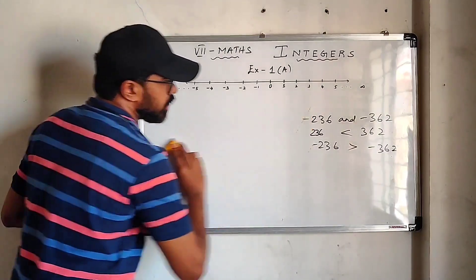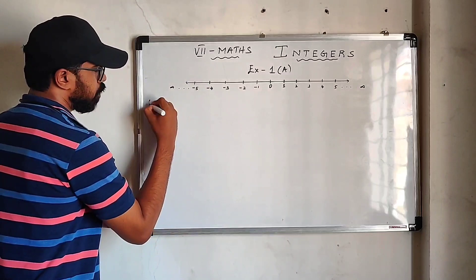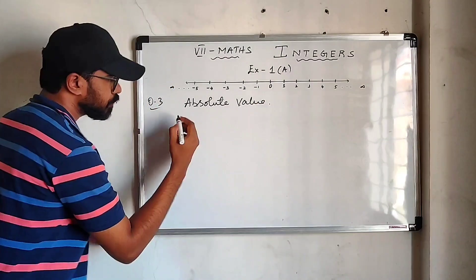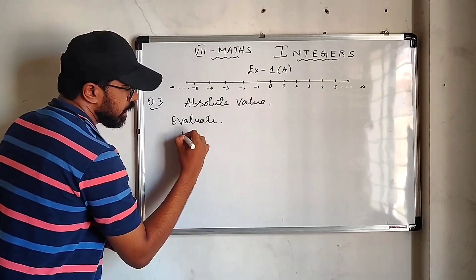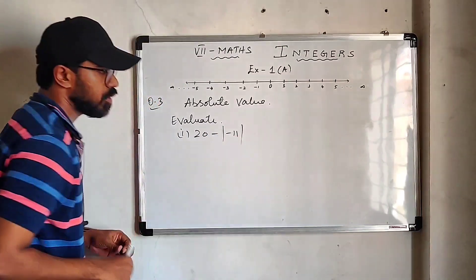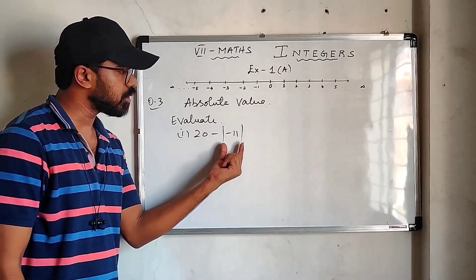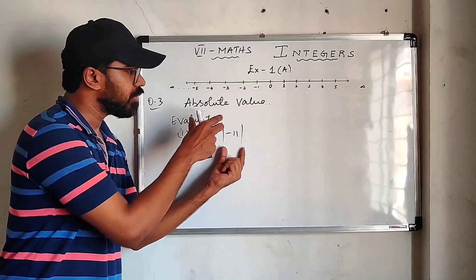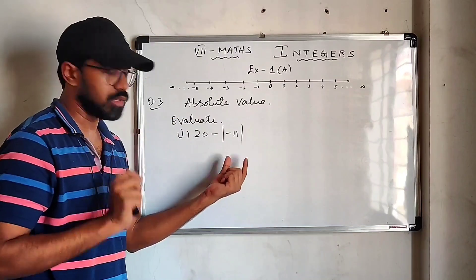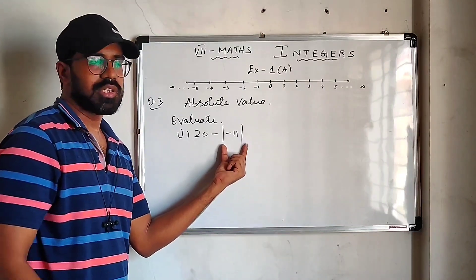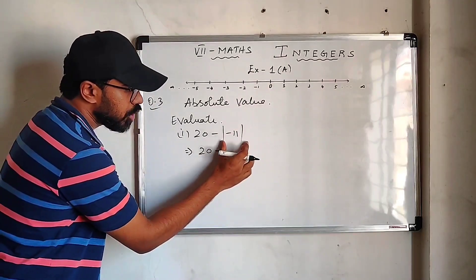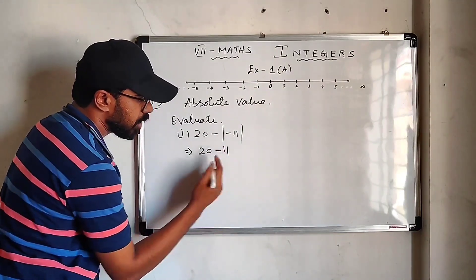Question number 3 is finding absolute value, which we have already discussed. The question says evaluate: 20 minus modulus of minus 11. The modulus, or absolute value, of any number is the number itself regardless of its sign. So here it is 20 minus the absolute value of minus 11. The absolute value of minus 11 is 11. So 20 minus 11 equals 9.